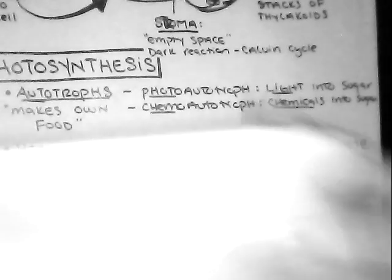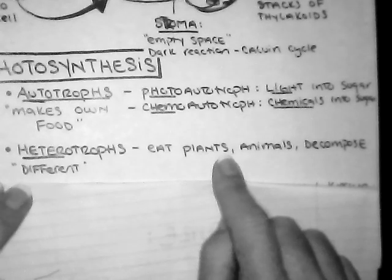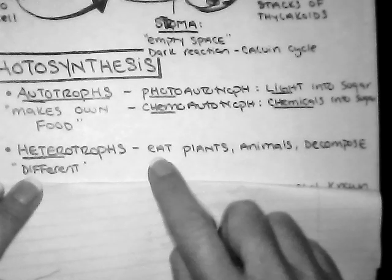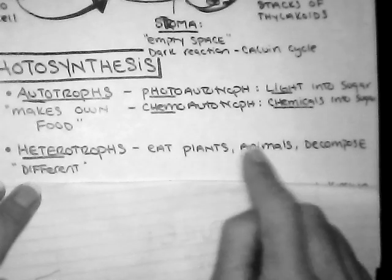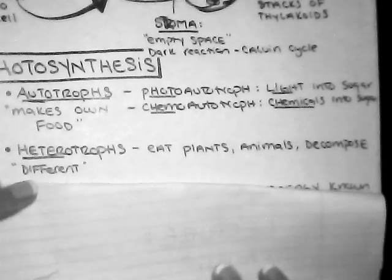Heterotrophs, on the other hand - hetero means different in Latin - are anything that's going to eat anything different from themselves. So I'm a human, I'm going to eat a plant, or I'm going to eat an animal. We are usually heterotrophs.